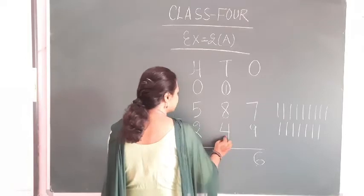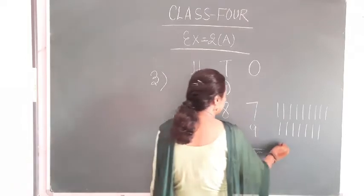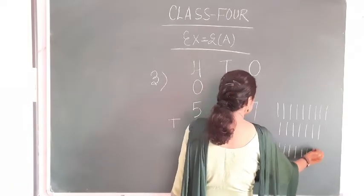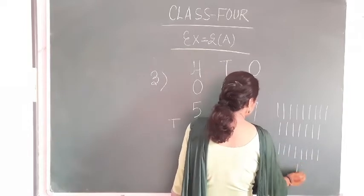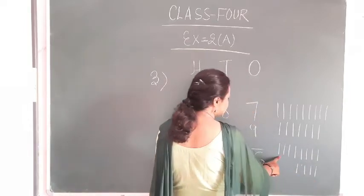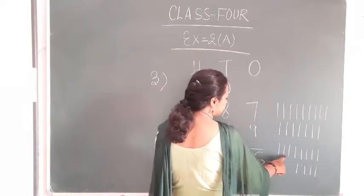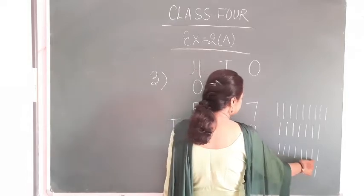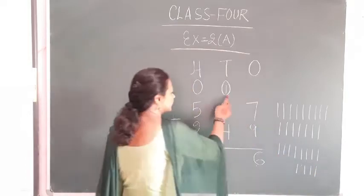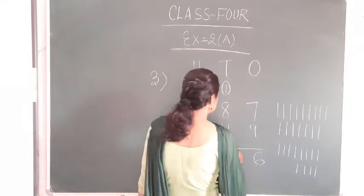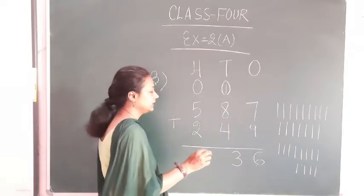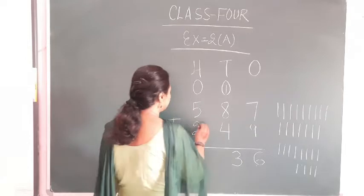Then 8 plus 4. Drawing 8 lines: 1, 2, 3, 4, 5, 6, 7, 8. And 1, 2, 3, 4. How many numbers total? 1 through 12. Carry 1. This is 13. Write 3, then carry 1.